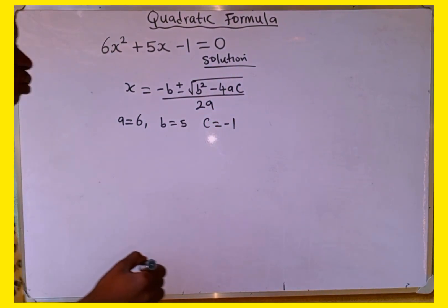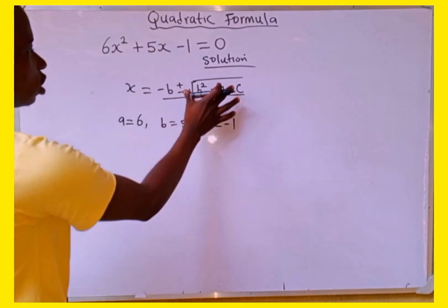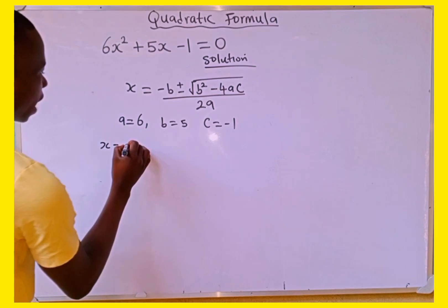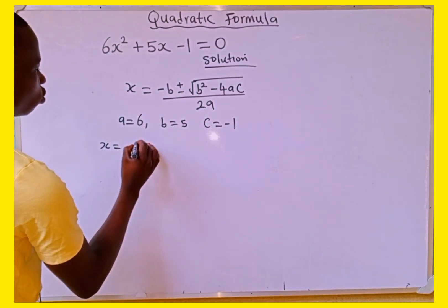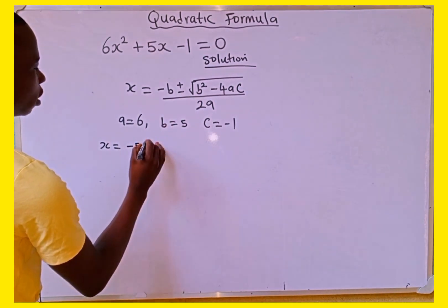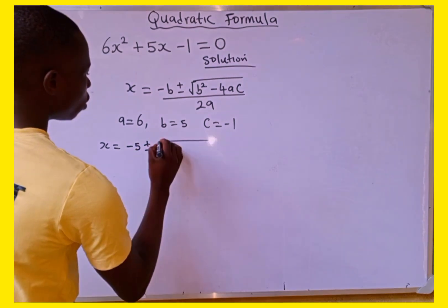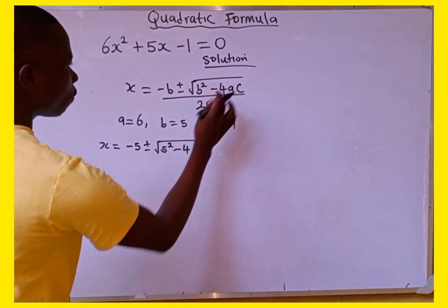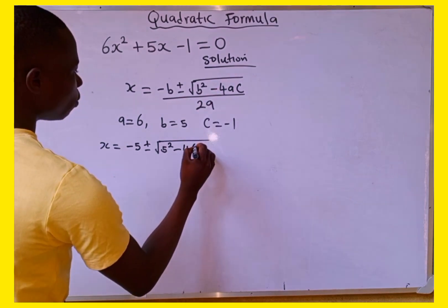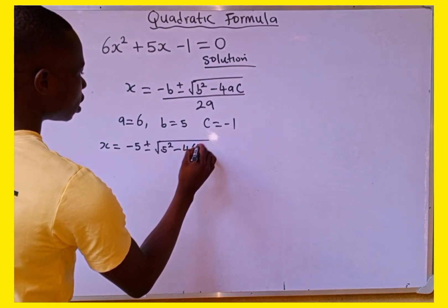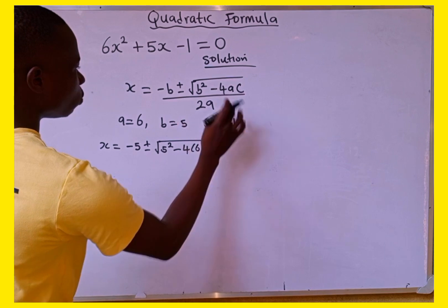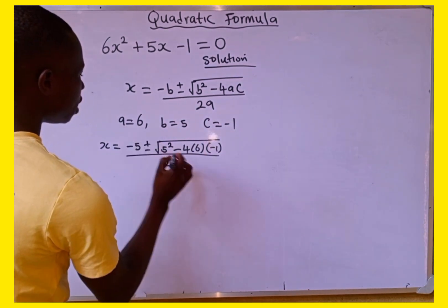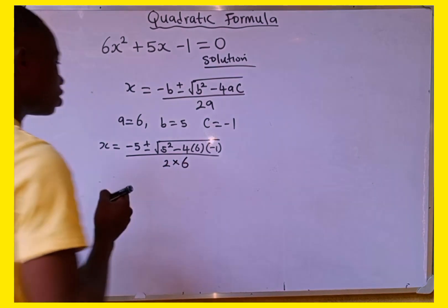Now we are going to substitute a, b, and c into the formula. So x will be equal to negative b — in place of b we have 5 — then plus or minus the square root of b squared, which is 5 squared, minus 4 multiplied by a which is 6, multiplied by c which is minus 1, all over 2 multiplied by a which is 6.